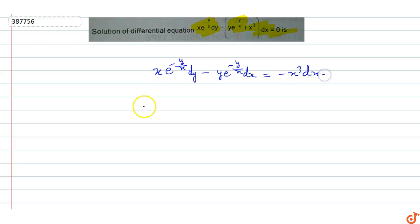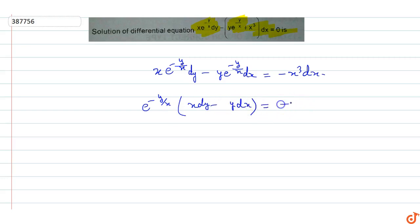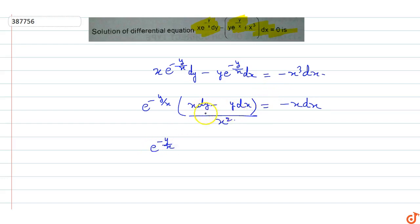Taking e raised to power minus y by x as common, we get e^(-y/x) times (x dy minus y dx) equals minus x times x squared. Now dividing both sides by x squared, the left side becomes e^(-y/x) times d(y/x).